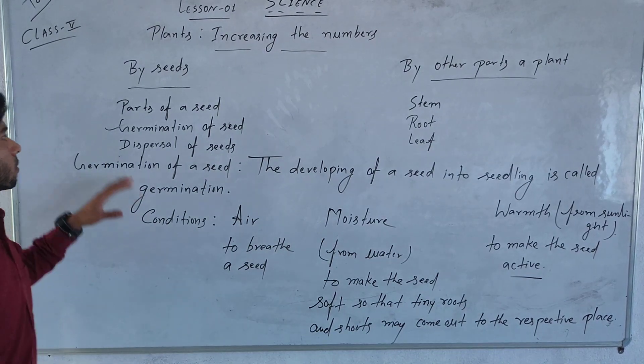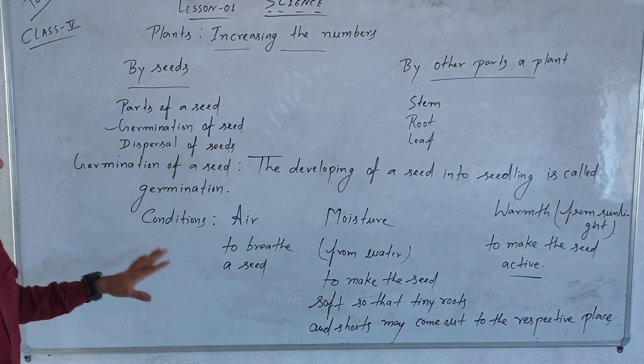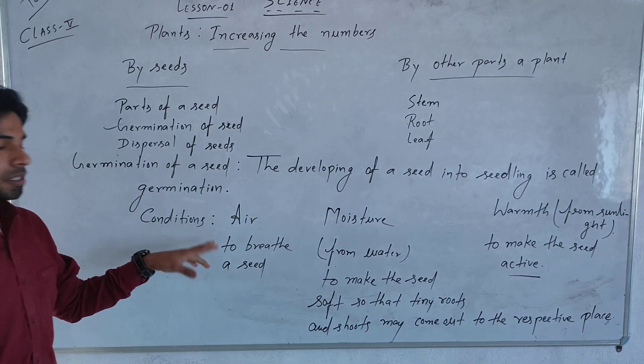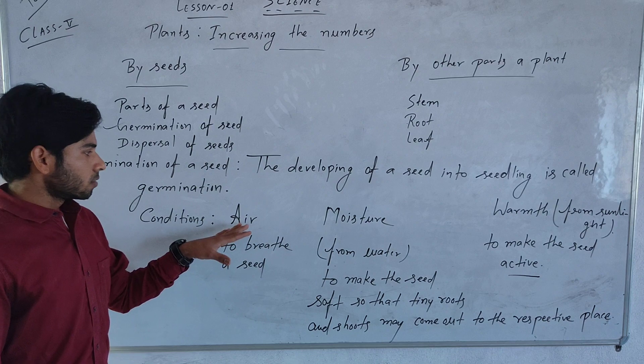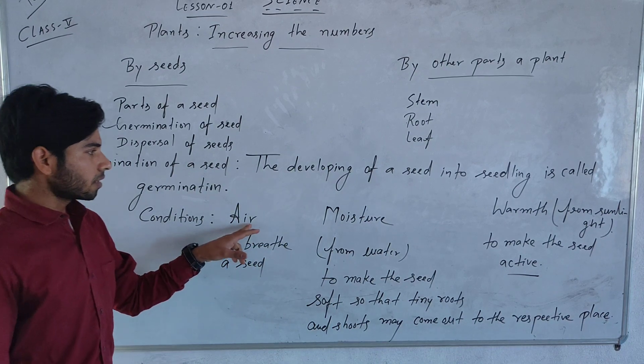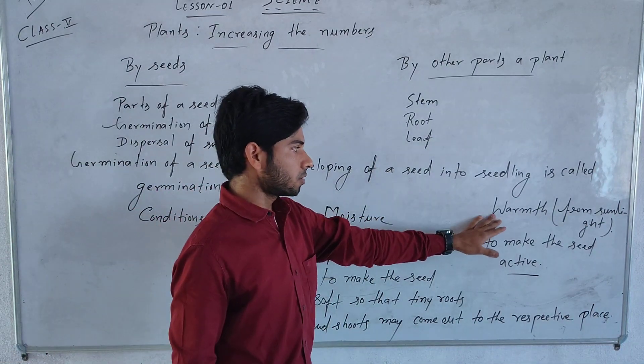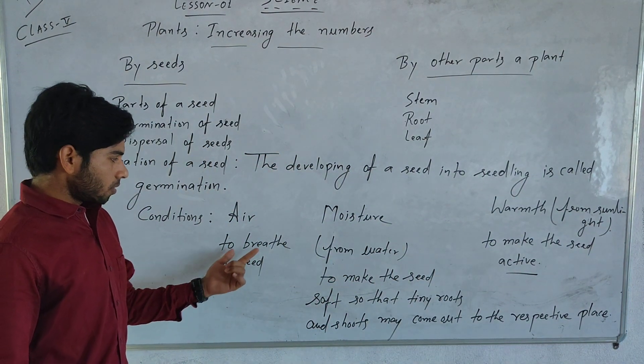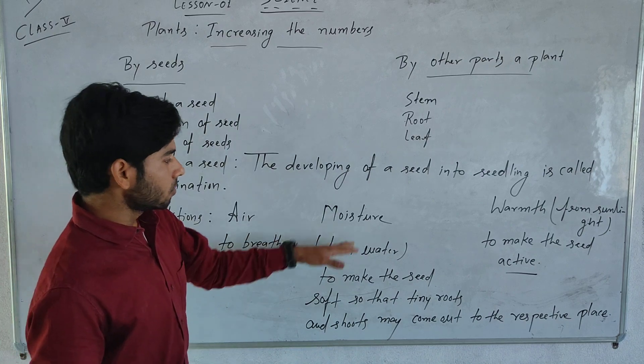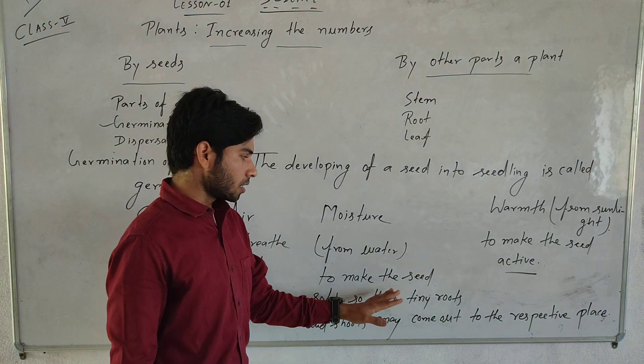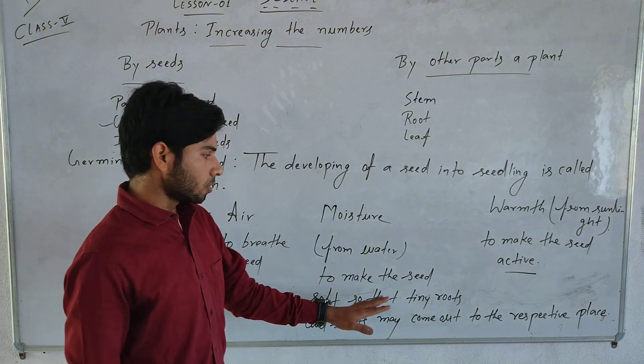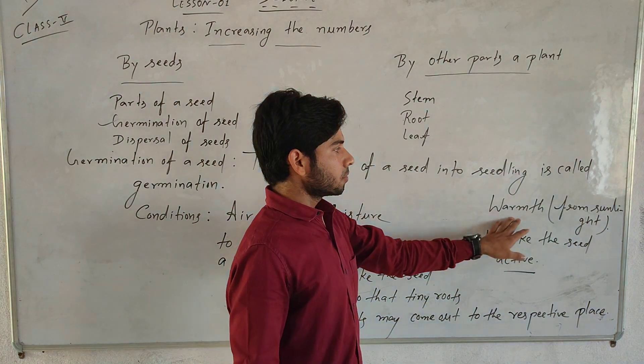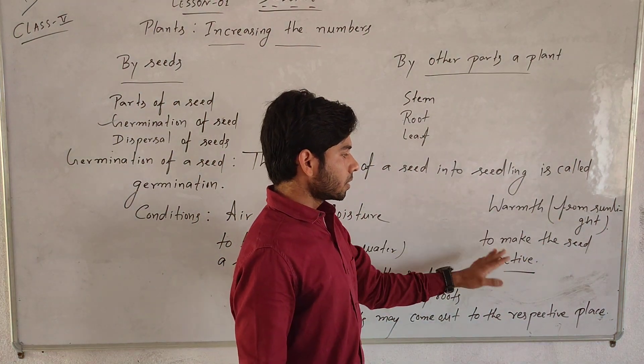The next topic is germination of the seed. For this germination, there are some conditions to germinate a seed. The conditions are moisture and warmth. Air makes the seed breathe, and moisture from water makes the seed soft so that tiny roots and shoots may come out. And warmth from sunlight to make the seed active.